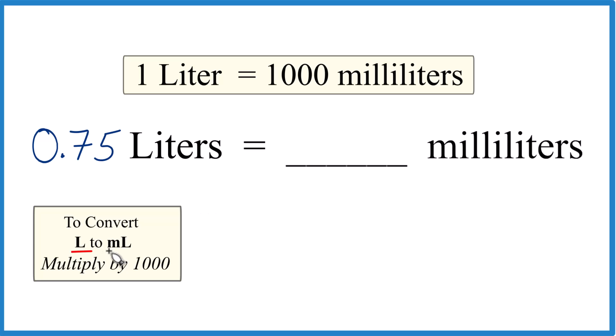So if we're going from liters to milliliters, we just multiply by 1,000. 0.75, that's our liters, times 1,000. And that 1,000, that's 1,000 milliliters in one liter. So milliliters over liters.